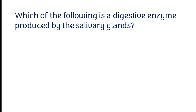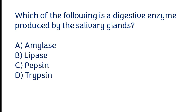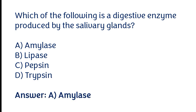Which of the following is a digestive enzyme produced by the salivary glands? Options: a) Amylase, b) Lipase, c) Pepsin, d) Trypsin. The correct answer is option A. Amylase is a digestive enzyme produced by the salivary glands.